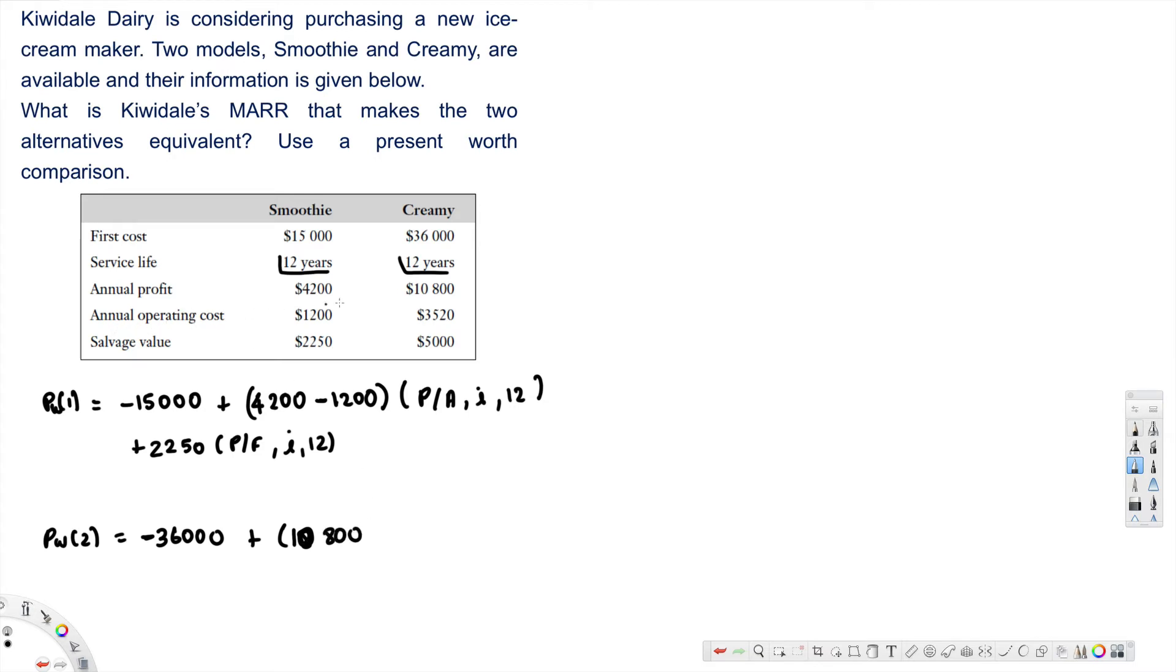Annual operating cost $3,520 - that's a cost, so negative $3,520, times P/A, i, 12. And after that we have $5,000 salvage value, that's positive, times P/F, i, 12.